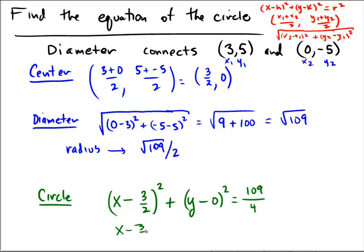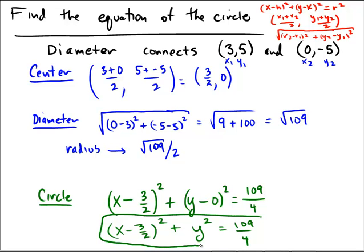For politeness sake, we usually write x minus 3 halves squared. We typically don't put the minus 0 since that's just y. And then there's the 109 over 4. That's what I would expect the final answer to be in fully simplified form.